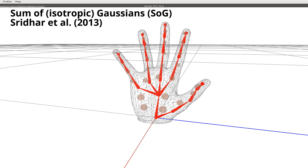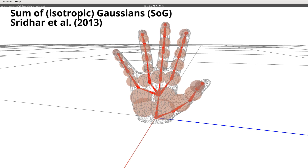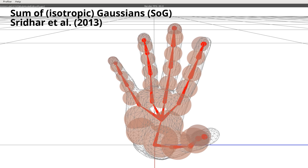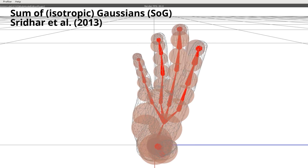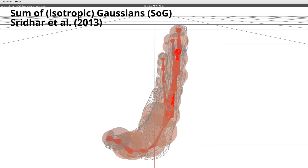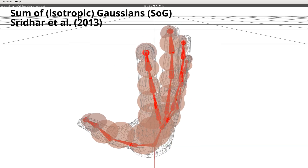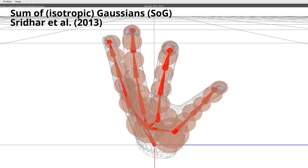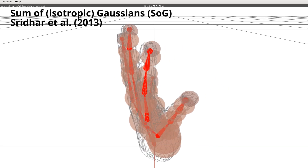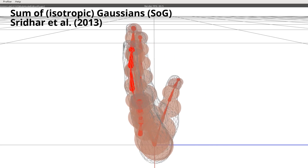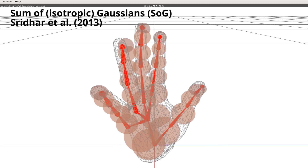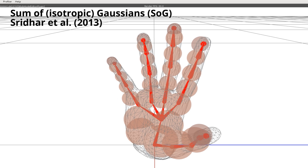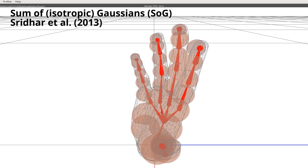A previous approach for hand tracking approximated the hand volume using a sum of 3D isotropic gaussians, each of which are visualized here as spheres. However, many isotropic gaussian primitives with small standard deviations are needed to approximate the hand.